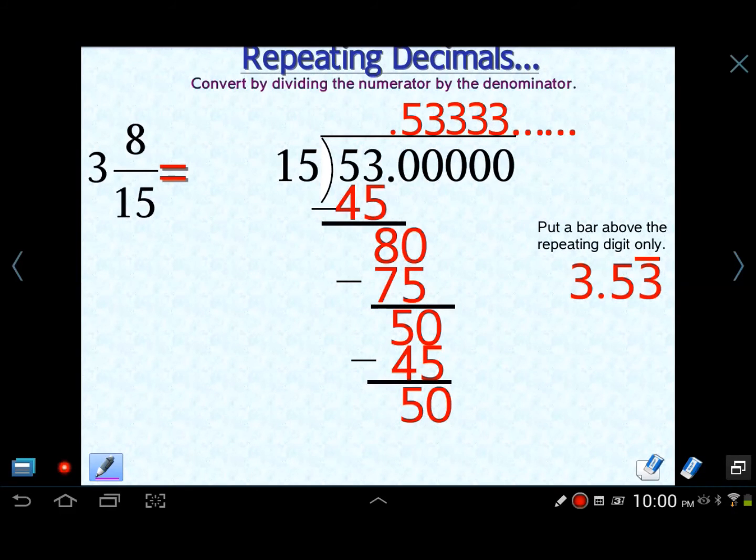Here's the mixed number. And I'm showing you right here the long division algorithm again. When you have a mixed number, what can you do? You can change it to improper. So fifteen times three is forty-five. And then forty-five plus eight is fifty-three fifteenths. So just go to your calculator.